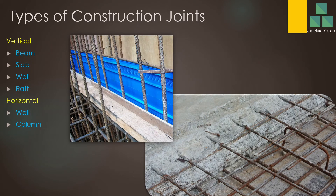Types of construction joints: there will be vertical construction joints and horizontal construction joints. In beams, slabs, walls, and roofs we may have a vertical construction joint when we can't continue the concrete continuously. We may have a vertical joint. When we can't continue the wall up to a certain height, then we may have a horizontal construction joint. Similar considerations apply over those elements.